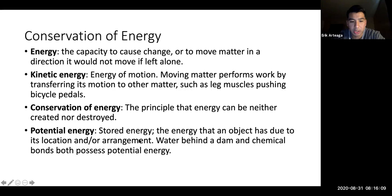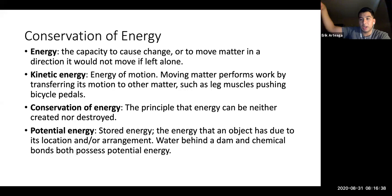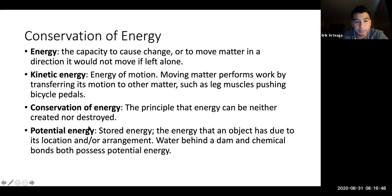Potential energy is stored energy — the energy an object has due to its location or arrangement. Water behind a dam and chemical bonds both possess potential energy. Our bodies store potential energy in a molecule called ATP. Another example is a boulder on top of a hill: if you push it, all that energy is dispersed through the movement of that boulder. Kinetic energy is the energy of motion — the energy required to cause that motion.